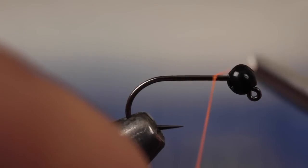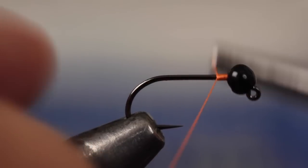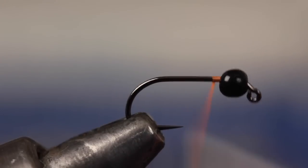Start your thread on the hook shank just behind the bead and take wraps rearward before snipping or breaking off the tag. Make sure the bead rests all the way down at the hook eye.